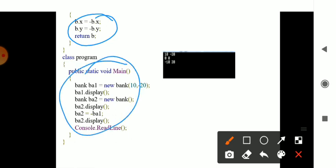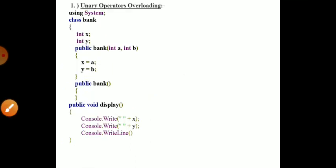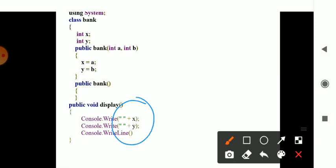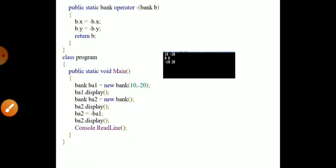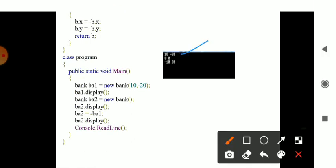In the main method, an object called val is created. Through val, you call the values of x and y — x is 10 and y is minus 20. The display method displays just the values of x and y, so the output shows 10 and minus 20. A second object ba2 is also created for the class Bank.